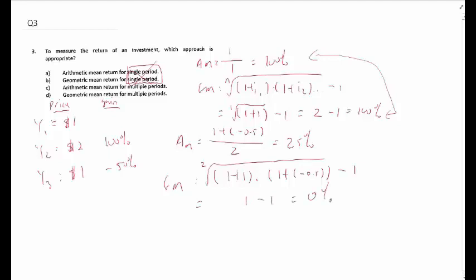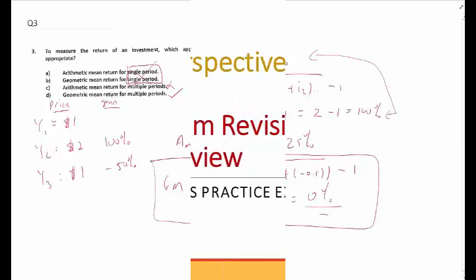Therefore, to measure the return of an investment, the most appropriate method is not to take the arithmetic mean for multiple periods, but to use the geometric mean for multiple periods, because that takes into account the gains and the losses. The geometric mean is more accurate, and that's why when we look at investment, we look at compound annual growth rate (CAGR), which takes into account the concept of geometric mean in calculating compounded returns.